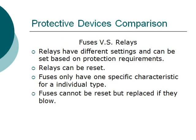Unlike a fuse, a relay can be reset. A relay has different settings and can be set based on protection requirements. A fuse only has one specific characteristic for its individual type and cannot be reset — it must be replaced when blown.